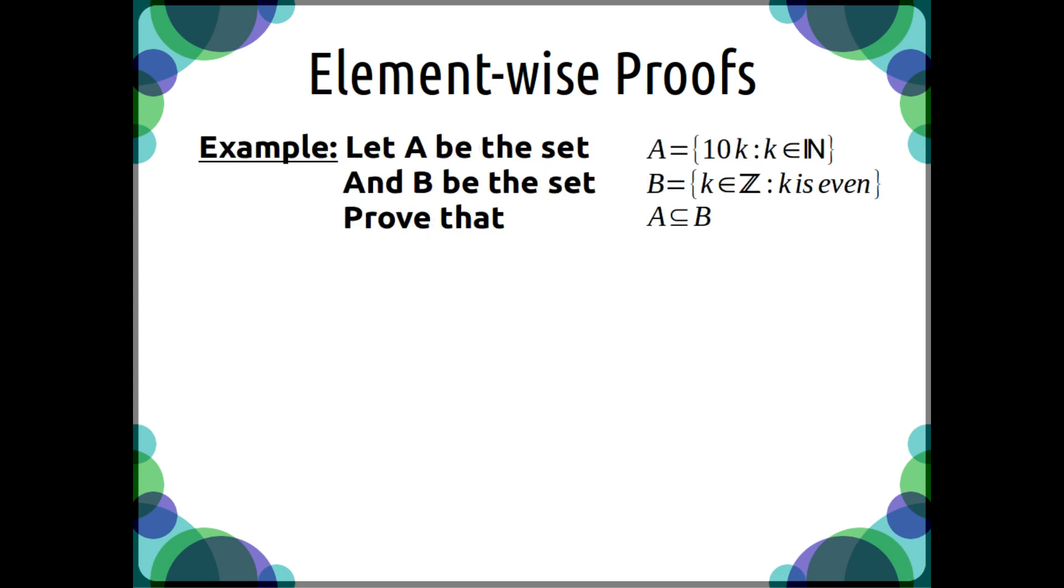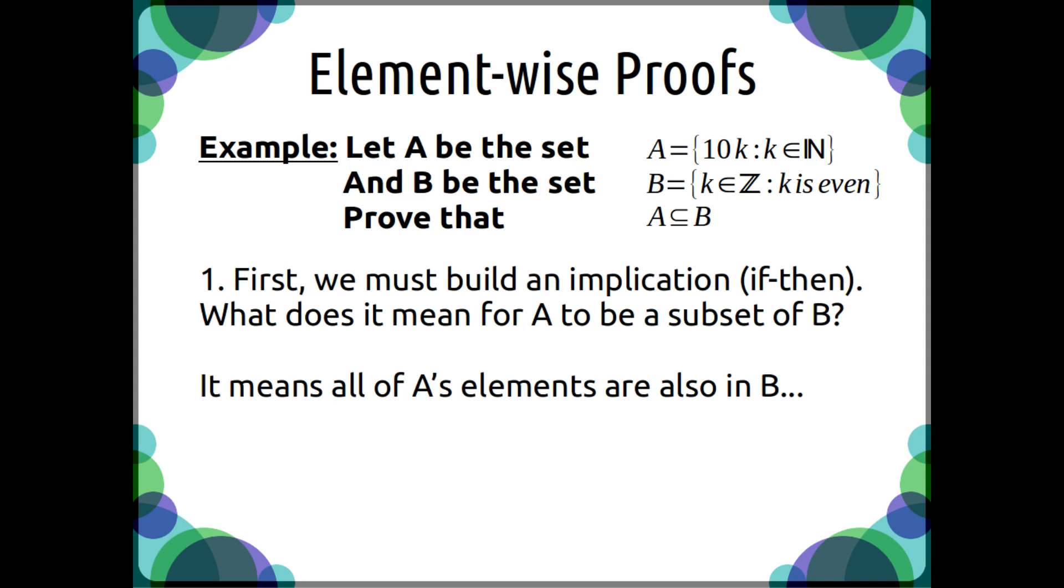So for example, let A be this set, where basically all of its elements are multiples of 10, and B be the set of all integers that are even. Prove that A is a subset of B. Well, it means that all of A's elements are also in B.